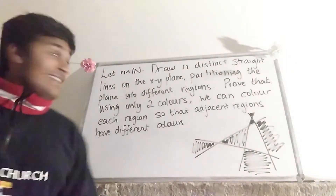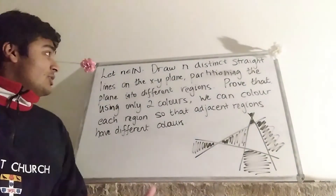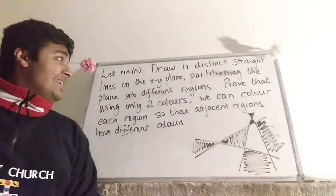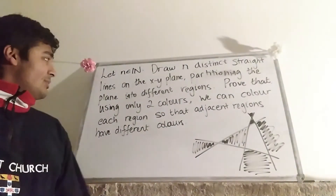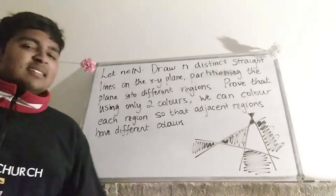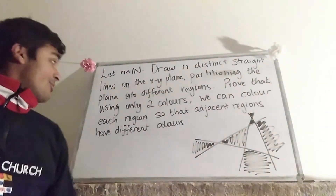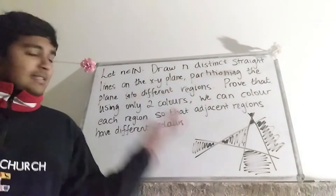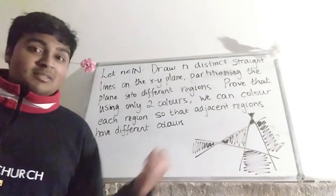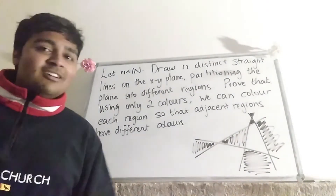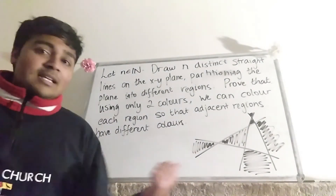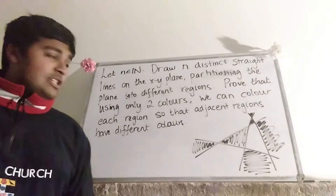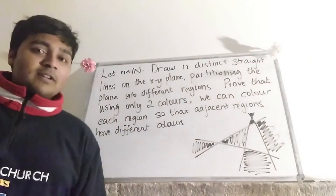We have a natural number n and we want to draw n distinct straight lines on the xy plane, and that will partition the xy plane into different regions. We want to prove that using only two colours — in this case just black and white — we can colour each region so that adjacent regions have different colours.